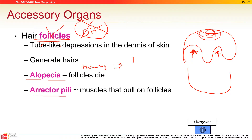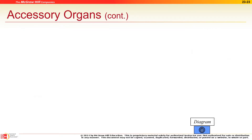The goosebump muscle — the erector pili — is smooth muscle. You can't control your goosebumps; they work on their own. When you're cold they fluff up to retain body heat, and when you're scared that muscle activates as well.